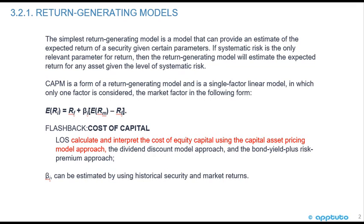CAPM is a form of a return-generating model and is a single-factor linear model in which only one factor is considered — that's the beta of the security — and the market factor is in the following form. The expected return equals the risk-free rate plus beta times the expected return of the market minus the risk-free rate, which is the market risk premium.